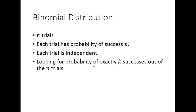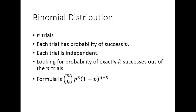If you did 50 coin flips, you could find the expected number of heads, but we want to figure out the probability of getting exactly some amount, or up to less than or equal to some amount. The formula for exactly k successes is n choose k, times p to the k, times 1 minus p to the n minus k.